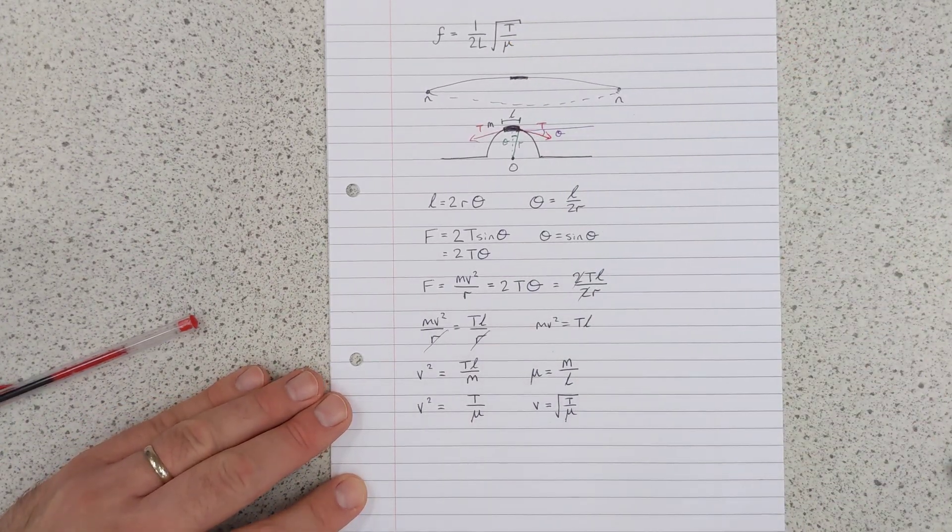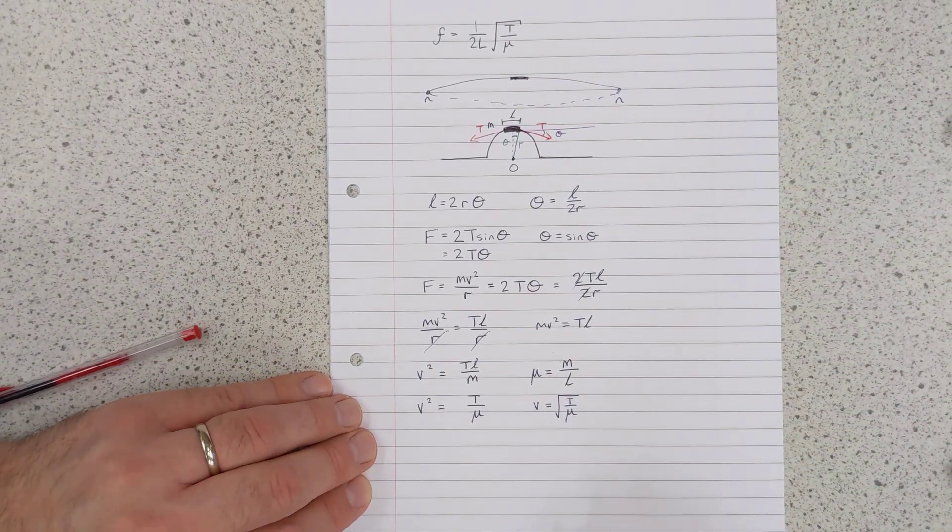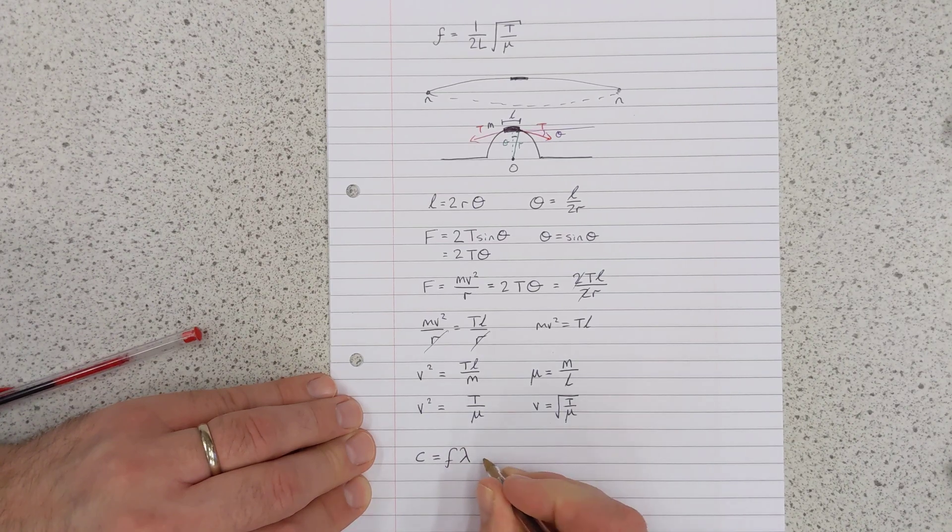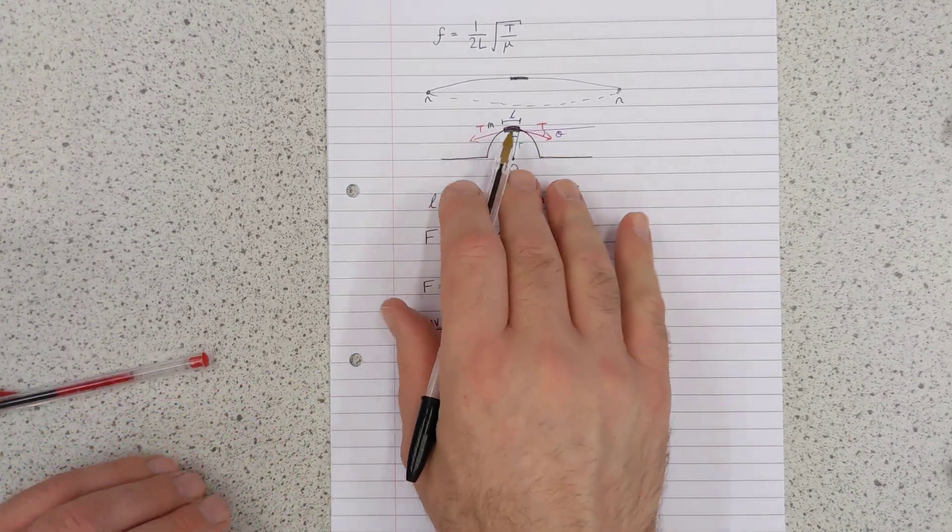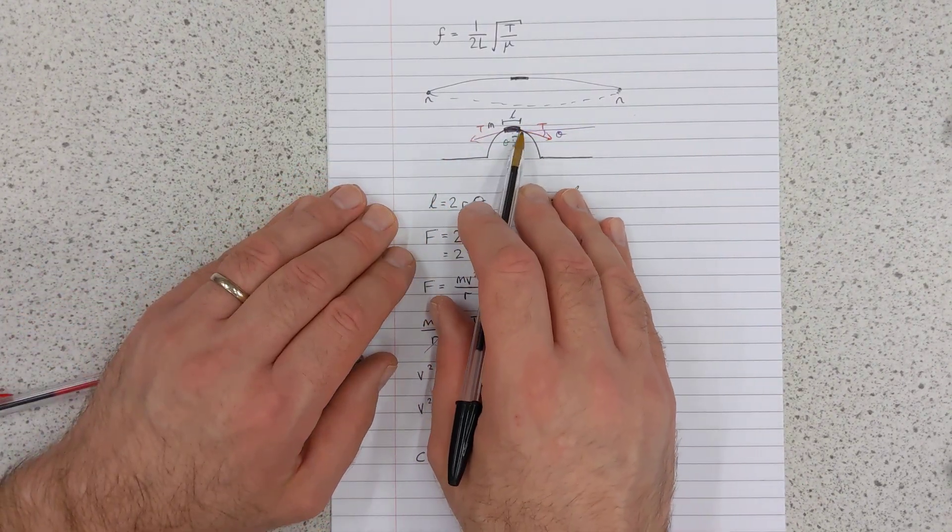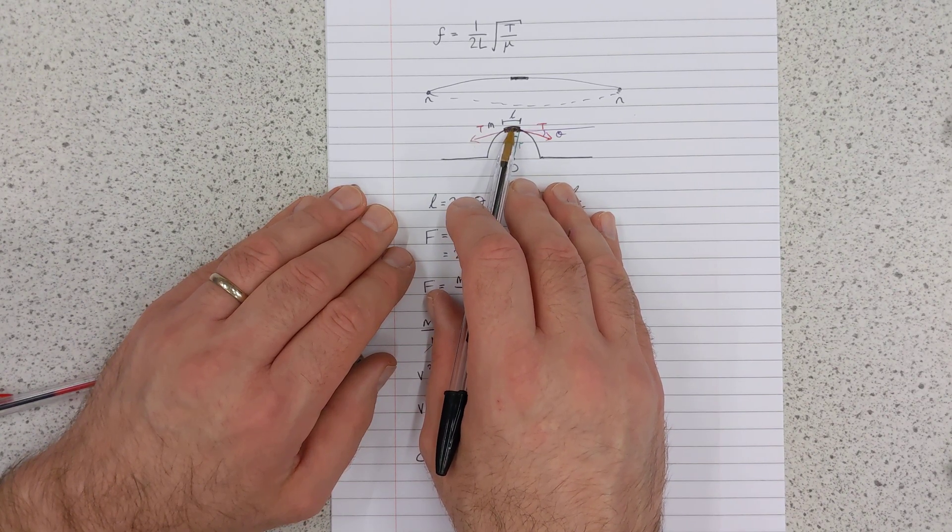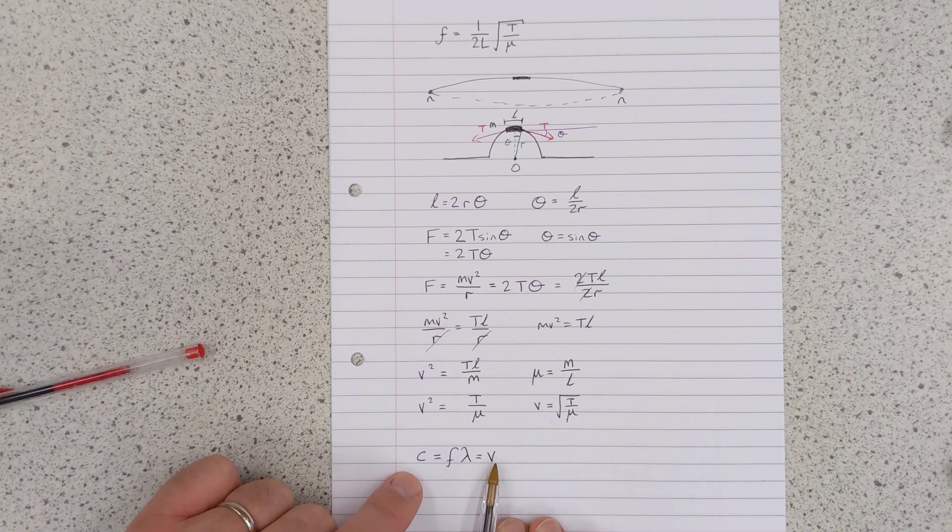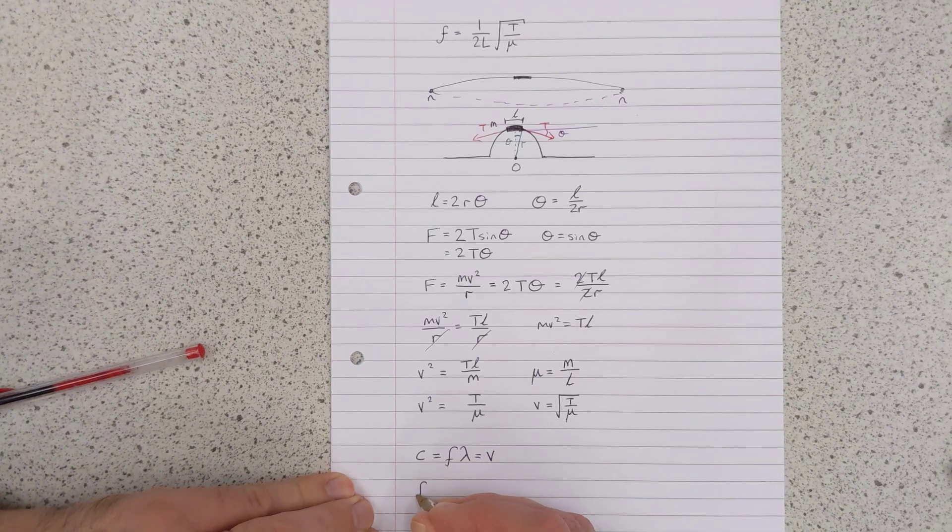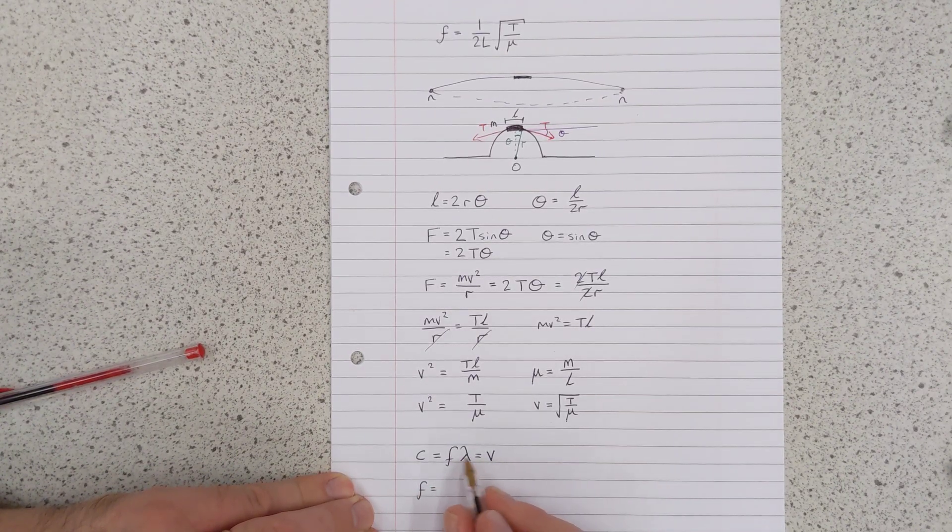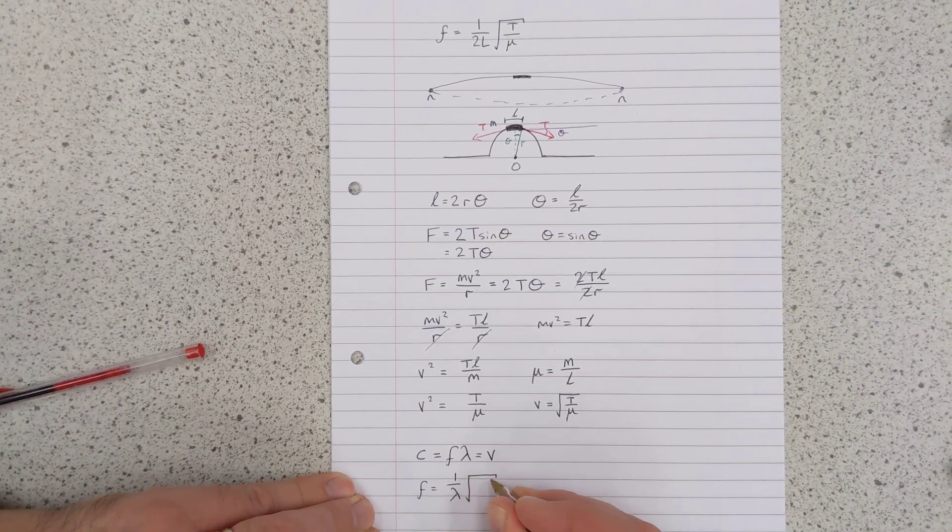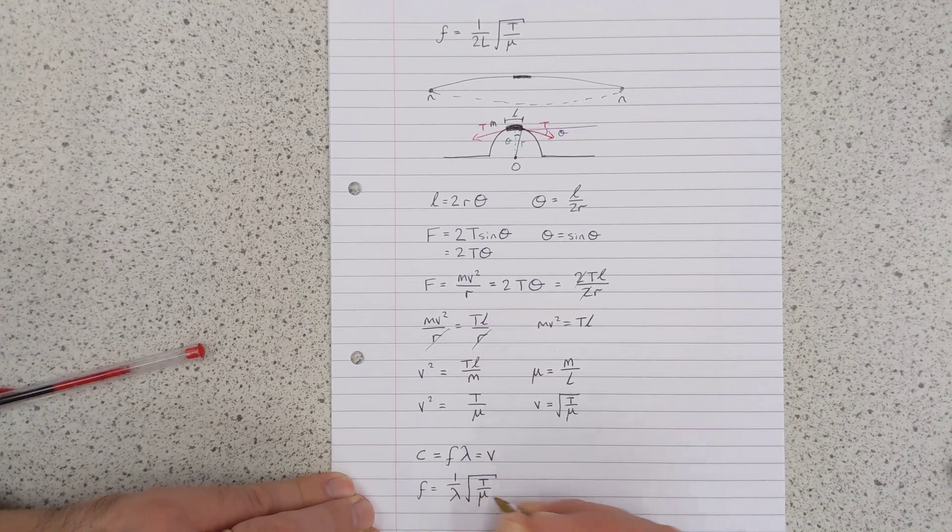Now this is a wave, so we can use the wave equation. c equals f lambda. And the c in this case is v, the speed of this element as it moves. Well, if the pulse is moving to the right, then we can consider from the reference frame of the pulse this element moving at this instant in time to the left. But it doesn't matter. The magnitude of v and c are the same. So we can say that f is equal to, rearranging this, 1 over lambda multiplied by v, which is square root of T over mu.